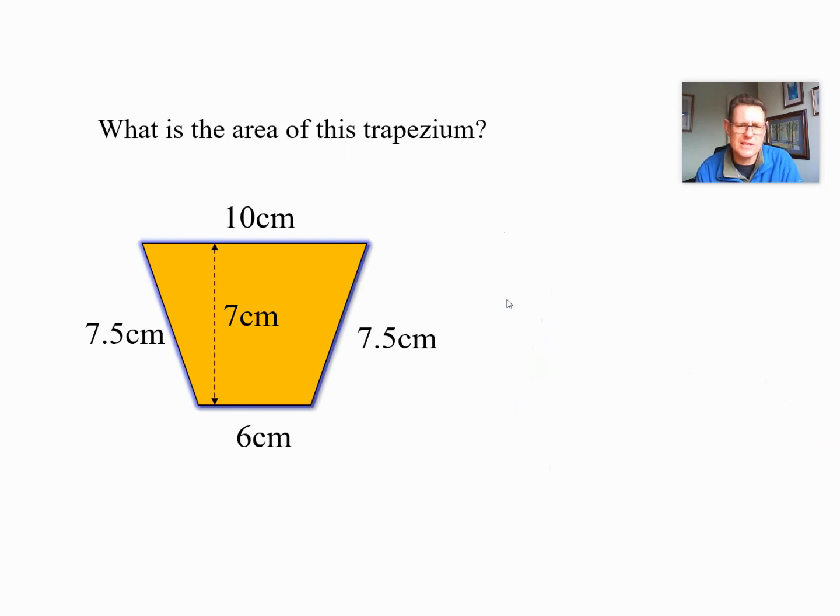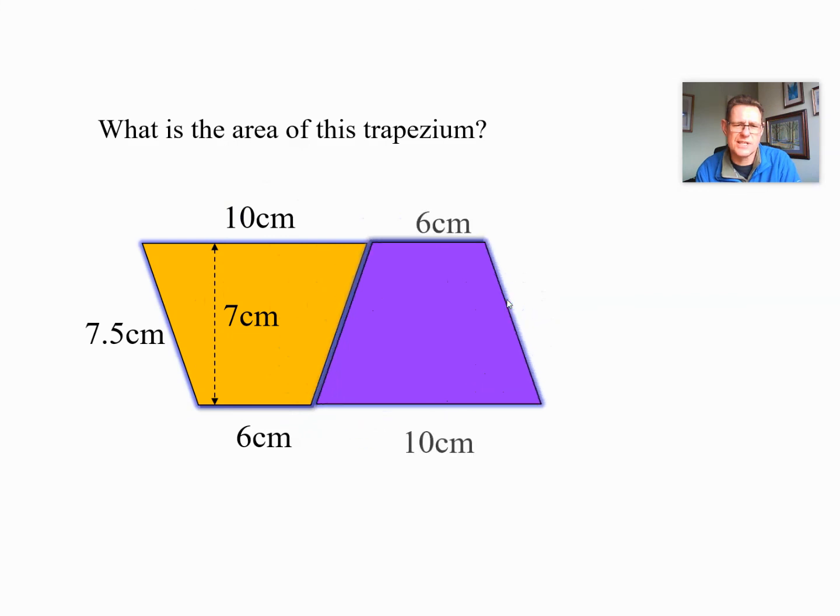OK, another one. Lots of numbers here. So have a think. Pause it if you want to have a go and think about which numbers you want to use. Let's rotate the shape. The 6 and the 10 swap place. Now the 7.5 was a sloping side and earlier I said don't use the sloping side. So must make sure we use the top and the bottom 6 and the 10. That makes 16. We're going to times by 7 and divide by 2. Now of course you can use a calculator for this bit. Just make sure you've worked out 6 and 10 being 16.